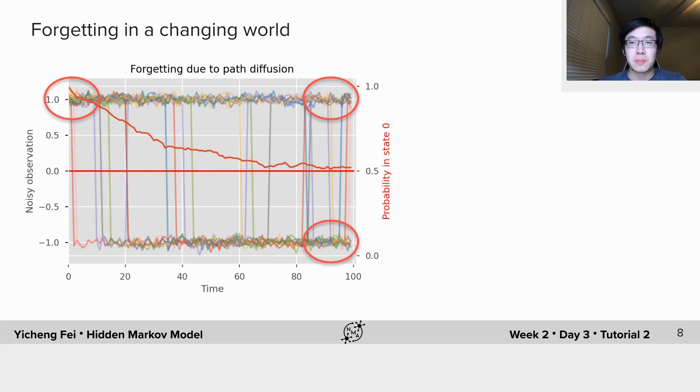Because the number of future paths grows exponentially with time, and if we look backward, the contribution of the initial state will decrease exponentially.